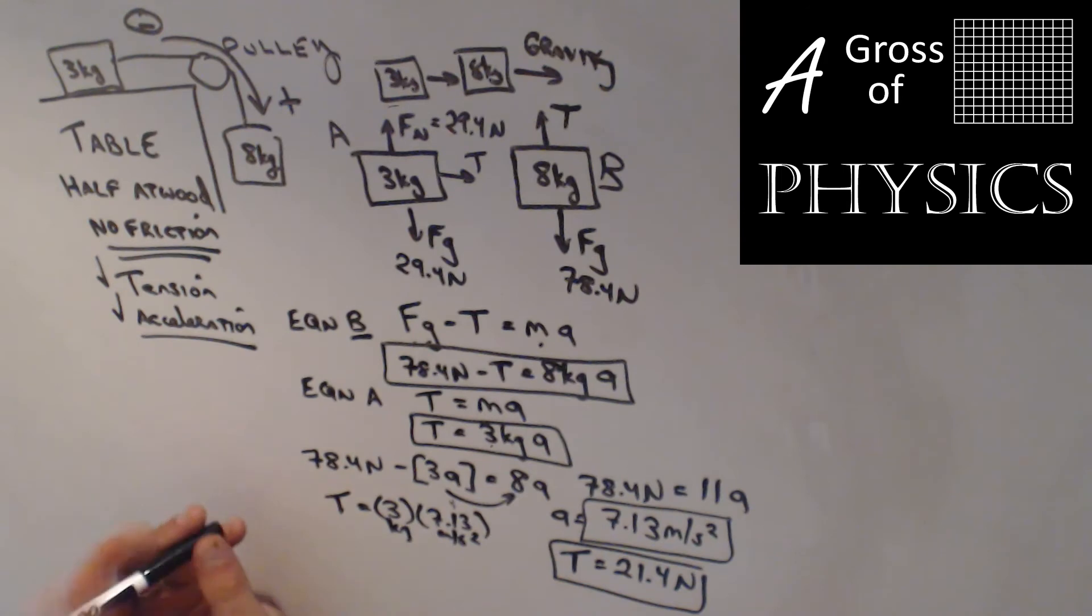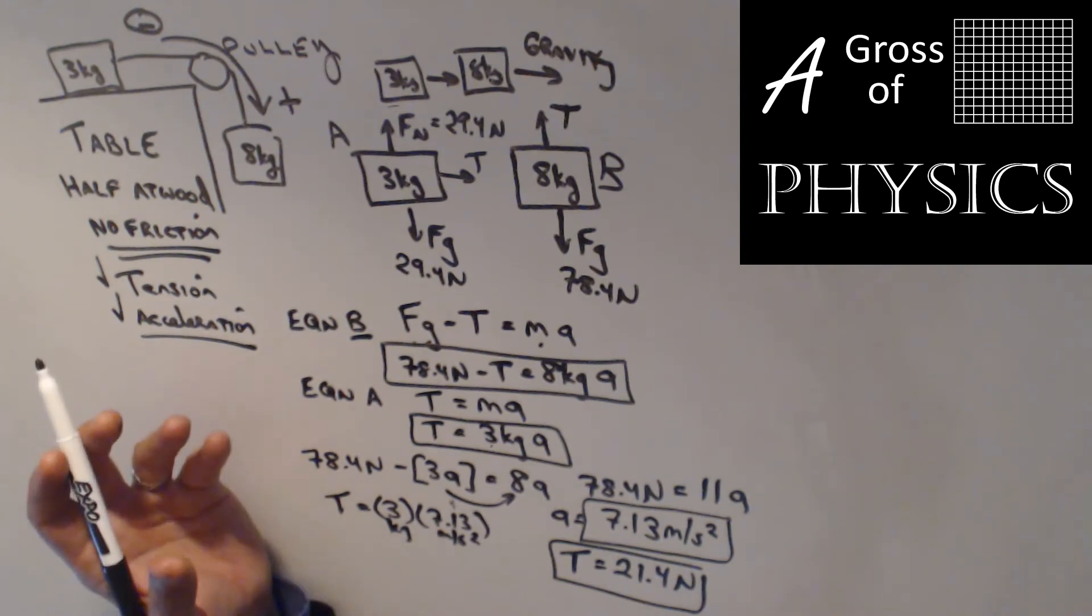There are simplified equations in textbooks that allow you to solve for Atwood's machines or half Atwood's machines with one unified equation. But what I like to do is solve it knowing what we already know: draw free body diagrams. Each object gets its own free body diagram, and then we combine the equations using the substitution method.